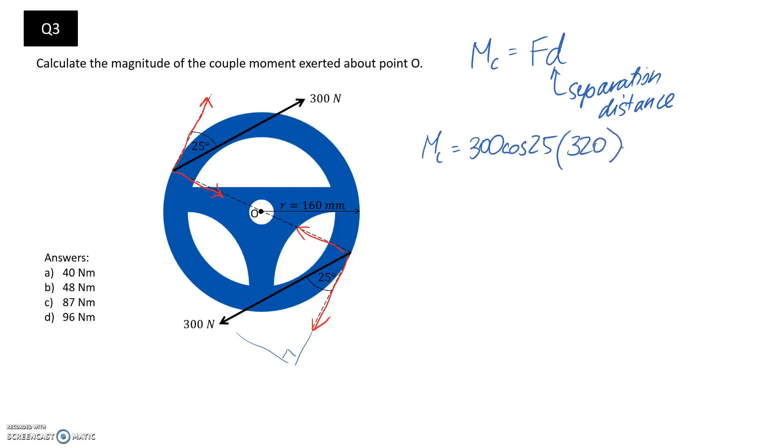The other thing you would normally think about is the direction that your couple moment is creating. You can see that these two forces together are going to try and rotate this thing in the clockwise direction. That means technically it should go in as a negative.